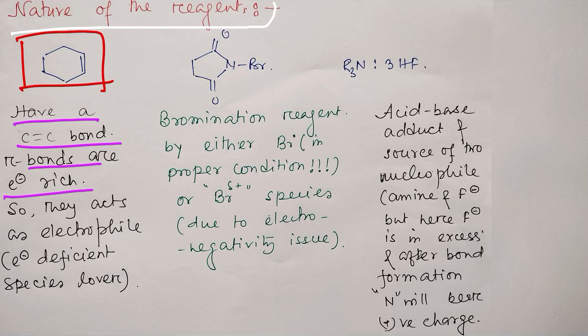These pi bonds are electron-rich, so they are actually nucleophilic in nature, not electrophilic. They are nucleophilic, electron-rich species. They love electron-deficient species, the electron-deficient species lover. In this case, you can look at clearly that this is an electron-rich species, it's a nucleophile.